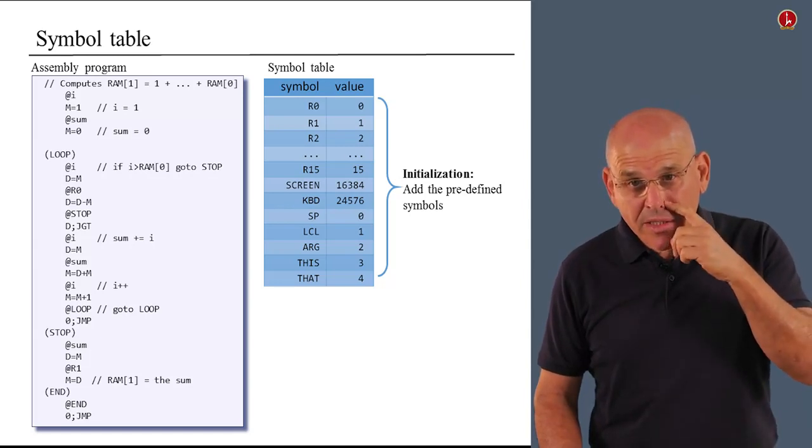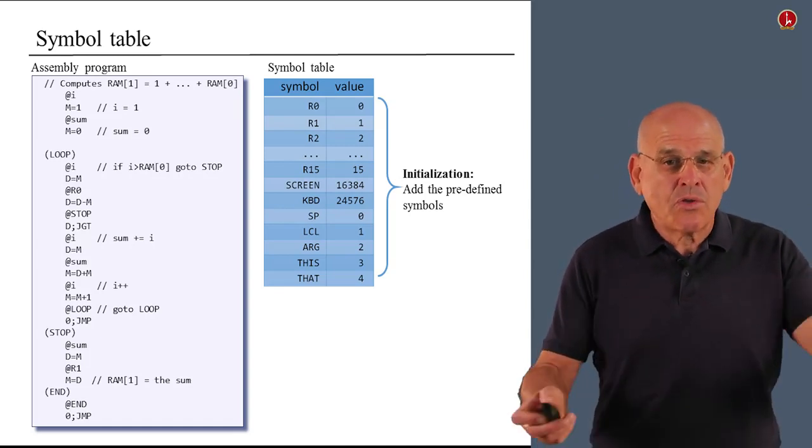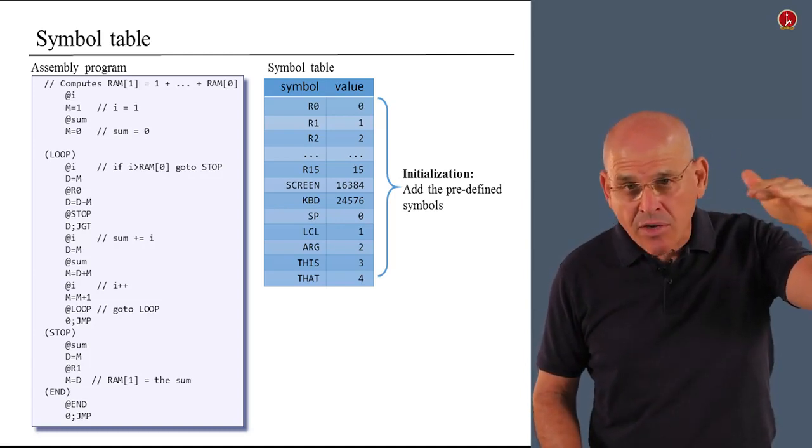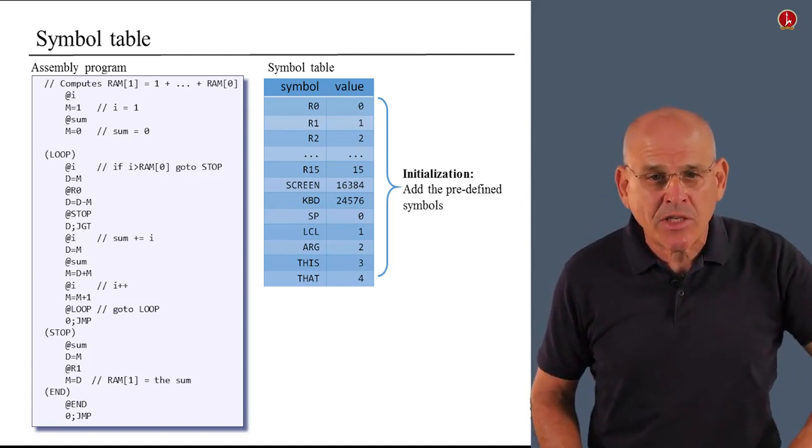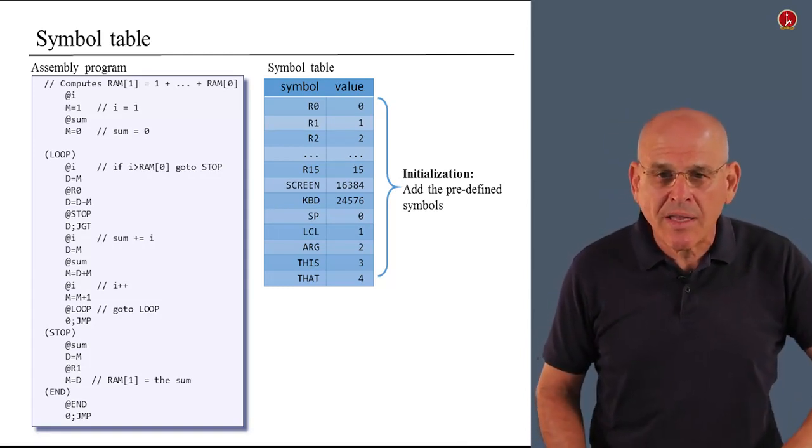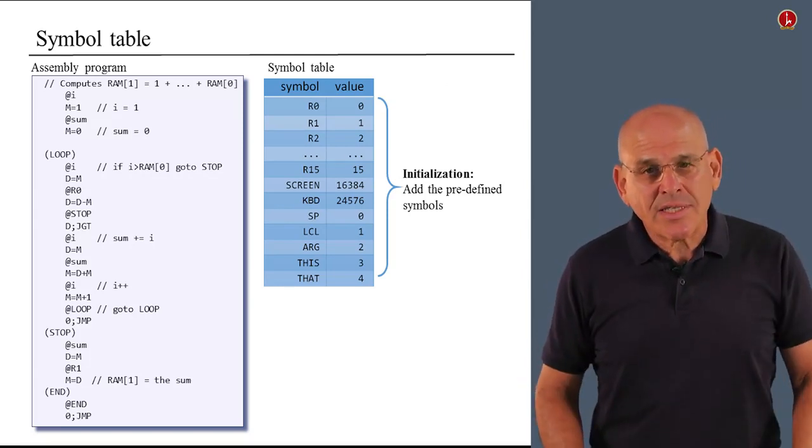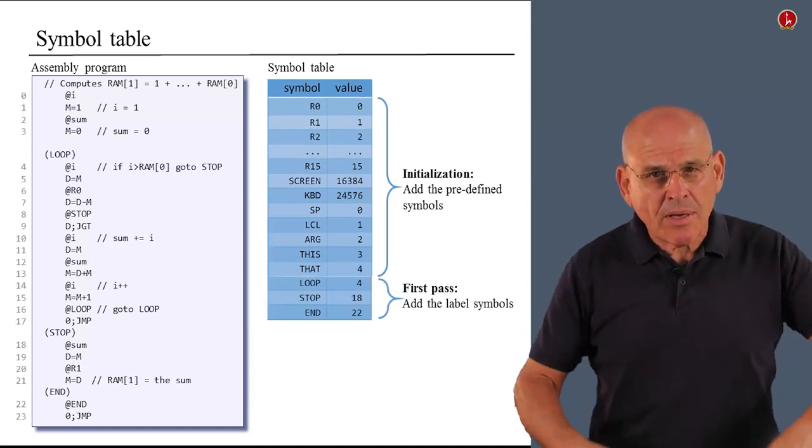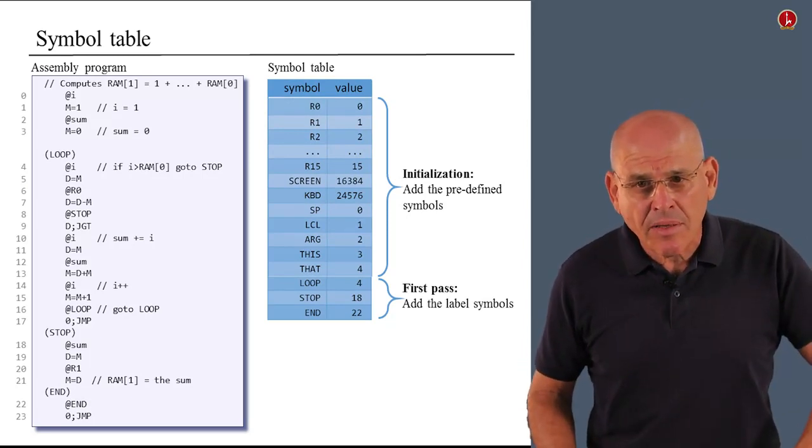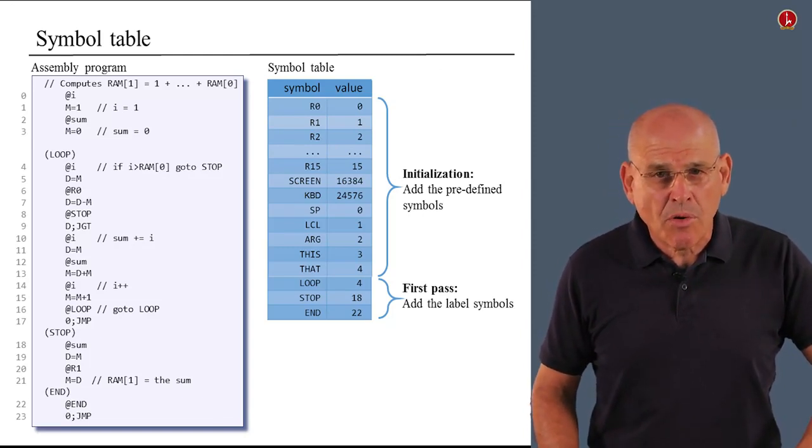So once you do this, if you have this count in mind, when you encounter loop, for example, you should know that loop corresponds to 4. And then you go on, you ignore everything else, until you hit the next label declaration, which is stop. And then you consult your counter. You see that stop corresponds to 18, and so on and so forth. Based on this scanning, you can continue to build the symbol table. And at the end of this process, you have added to the symbol table all the symbols that represent goto destinations in your program, label symbols.